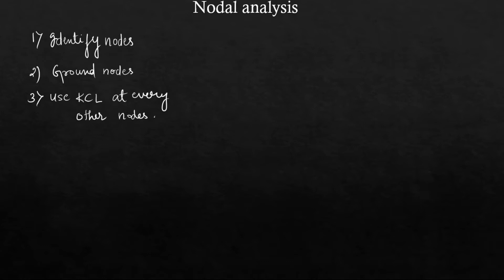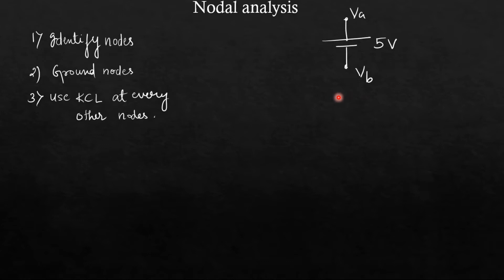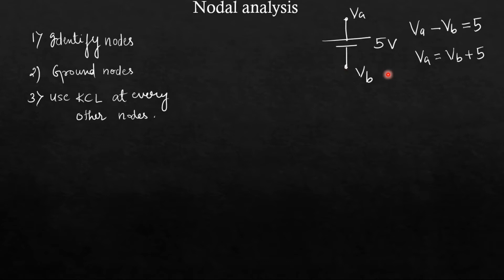Now in order to write the KCL equation we need to know some basics. Suppose we have a 5 volt battery. The positive terminal voltage is Va and the negative terminal voltage is Vb. The relation between Va and Vb is Va minus Vb equals 5, or Va equals Vb plus 5. This means the voltage at terminal A is 5 volts more than the voltage at terminal B — this terminal is at higher potential by 5 volts.